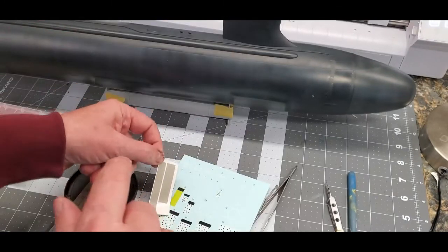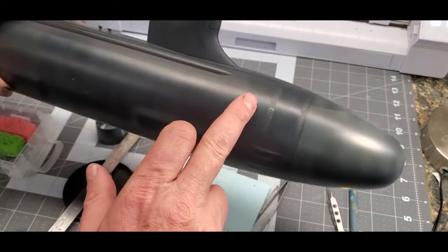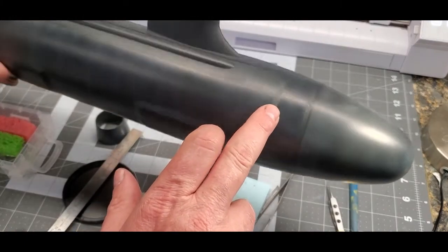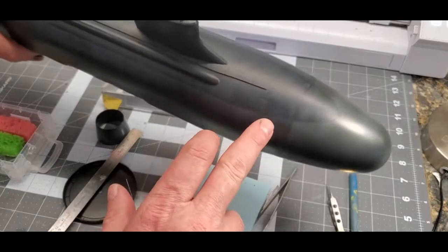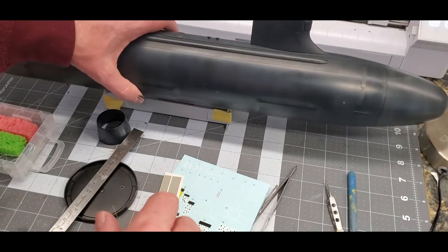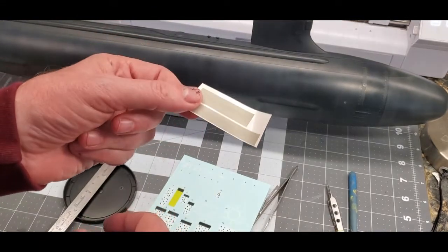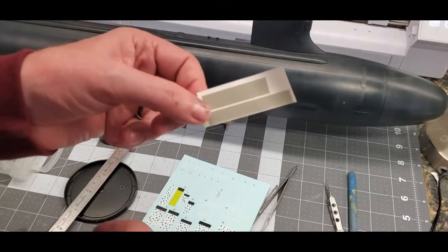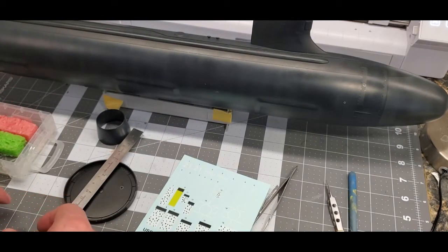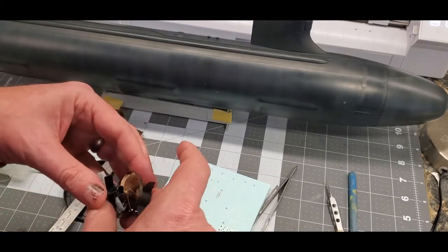This will show me where they go. I've actually placed that guide on the model right here. It's just going to show me where I'm going to put my decals. Once again, the Cameo plotter shows me a way that it's extremely useful in my modeling.